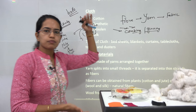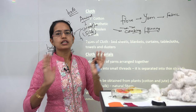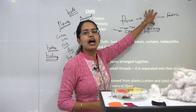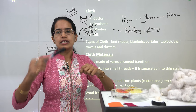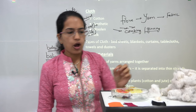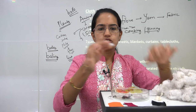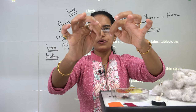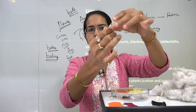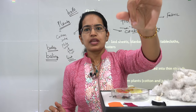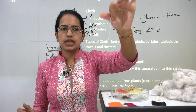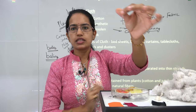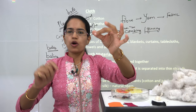Through the process of baling, huge bundles of cotton are created and transported to factories for spinning, where yarn is created. Yarn is basically the thread. To make yarn, you take cotton, stretch it as far as possible, and then roll and twist it — that is the simple method done by hand. Now it is done with machines in factories, and the process is much more simplified.